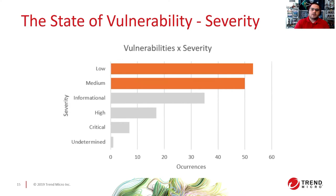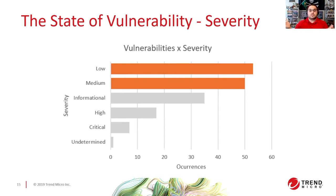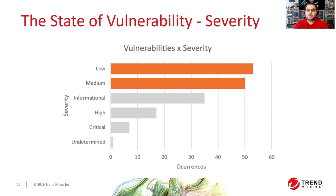The next graphic is vulnerabilities per severity. We found that most of the reports — most projects — only had low and medium vulnerabilities, which is good and reassuring for those of us using those projects. Only very few of them had some critical vulnerabilities. It's interesting to note that despite the great quality of the consulting firms that tested these projects — even though they're well-known in their field — they couldn't find a lot of critical or high vulnerabilities across all these projects. That's important to highlight.